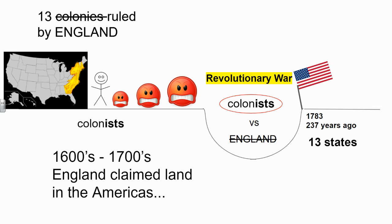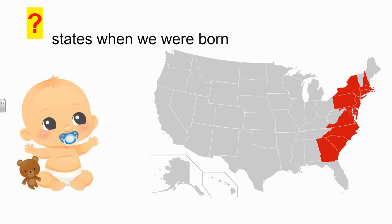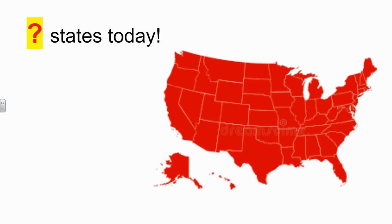Everything on this slide is going to be our focus for the second trimester. Hopefully you're excited to learn what made the colonists so angry, how England came to claim those 13 colonies, how the colonists managed to beat the strongest army in the world, and who some of the people were that fought in the Revolutionary War. When our country was born we only had 13 states, but today our country has grown into the 50 states we have — and that land was once controlled by France and Spain.